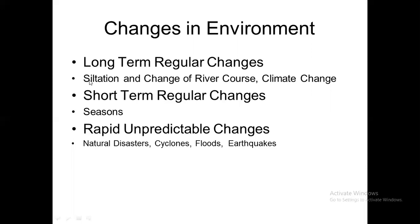Long-term regular environmental changes include processes like siltation of deltas and changes in river courses — for example, the Ravi River has shifted its course by up to 4 km due to various ice ages. Climate change is also evident: we are currently in the Holocene, a warm age that began 10,000 years ago, whereas our forefathers lived through ice ages.